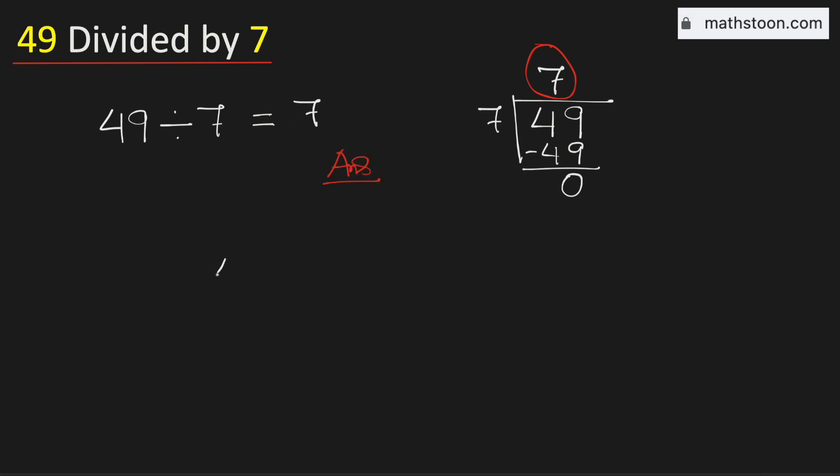Also look that we can write 49 divided by 7 as 49 by 7. In the next step, we will write this 49 as 7 times 7, and we have 7 in the bottom.